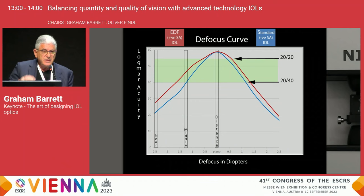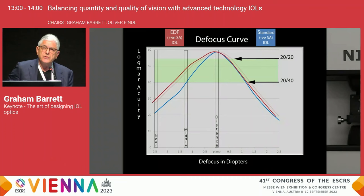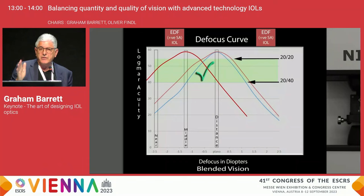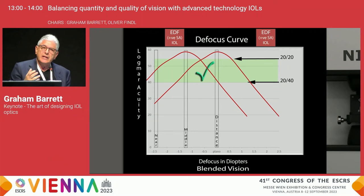Looking at the defocus curve — log molar acuity from minus two and a half to plus two and a half diopters in half-diopter steps — you can see the extended range of focus of the positive spherical aberration EDF IOL compared to a standard negative spherical aberration IOL. If you put the extended depth of focus lens in an eye with modest monovision of minus one and a quarter diopter, you can see the greater overlap between the distance and near eye, and you don't really have monovision — you have blended vision.